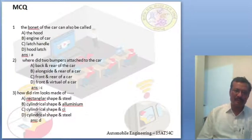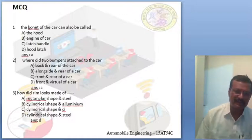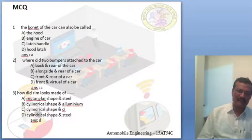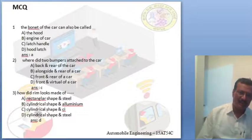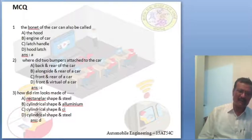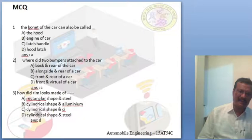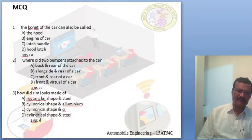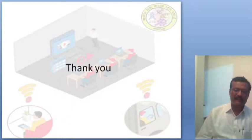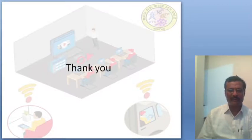Second question: where is the bumper attached to the car? Options: back and rear of the car, alongside and rear side of car, front and rear of car, or front and virtual of cars. The answer is C, front and rear of car. Third question: what shape are rims made in? Options: rectangular shape of steel, cylindrical shape of aluminium, cylindrical shape of cast iron, or cylindrical shape of steel. The answer is D, cylindrical shape of steel. This concludes the topic of vehicle body components.